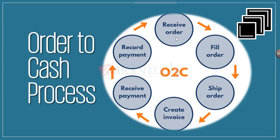Once you receive the order for one iPhone, you will check your organization's quantity balance — whether you have that item in stock. If you have the item in your warehouse or shop, then you will fill the order. Filling the order means you fulfill it. Once you fulfill the order, you will then ship it.